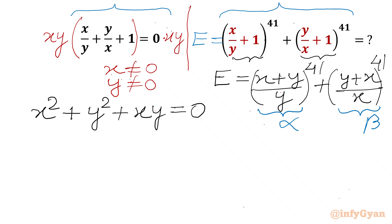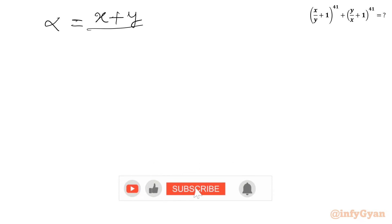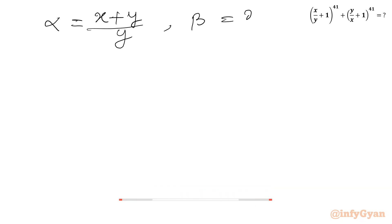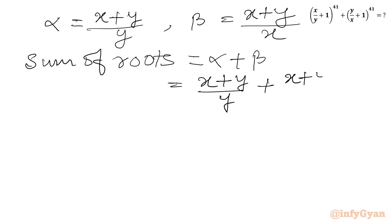I am thinking about a quadratic equation whose roots are alpha and beta, so I can find the sum of roots and product of roots. We are actually calculating alpha^41 + beta^41. Let us find alpha + beta: this is equal to (x+y)/y + (x+y)/x.